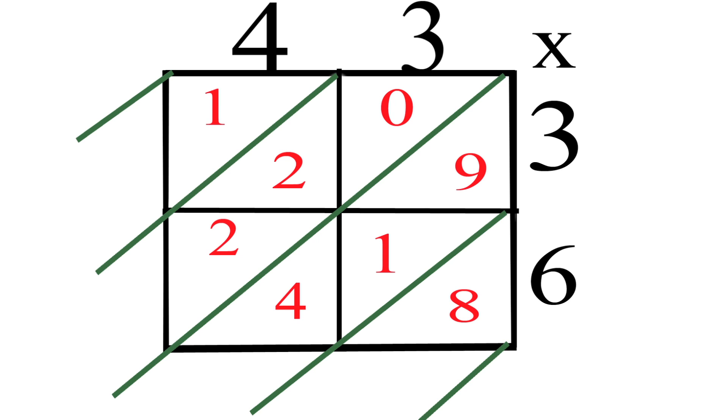Now we add each number placed in the diagonal areas from right to left. Place the eight down first, then add four plus one plus nine to get the answer 14. Place the four on the bottom and carry the one up on the other diagonal area